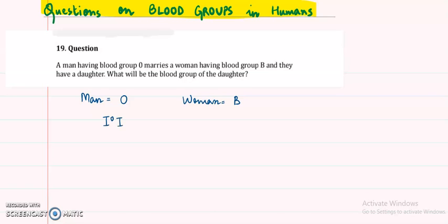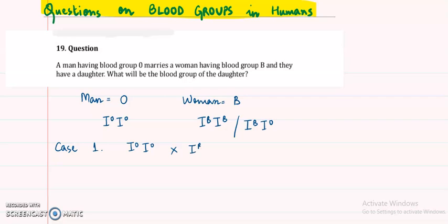In such type of questions it is always better to write everything. The man has blood group O, so we write his genotype. For the woman, two possibilities exist: she could be homozygous dominant or heterozygous dominant. So we will be solving two cases. In case one, the genotype of the man is IOIO, and the woman is homozygous dominant.